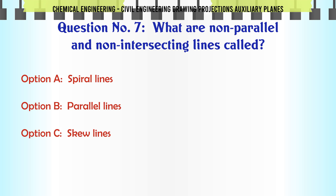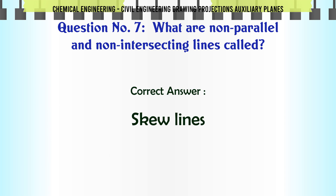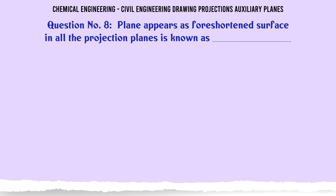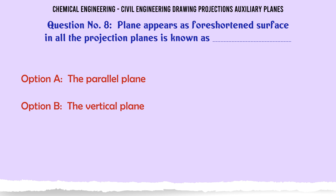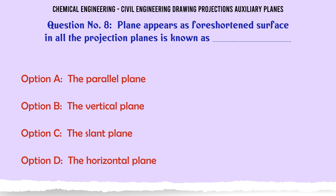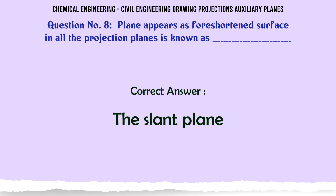What are non-parallel and non-intersecting lines called? A) Spiral lines, B) Parallel lines, C) Skew lines, D) Perpendicular lines. The correct answer is Skew lines. A plane that appears as a foreshortened surface in all the projection planes is known as: A) The parallel plane, B) The vertical plane, C) The slant plane, D) The horizontal plane. The correct answer is The slant plane.